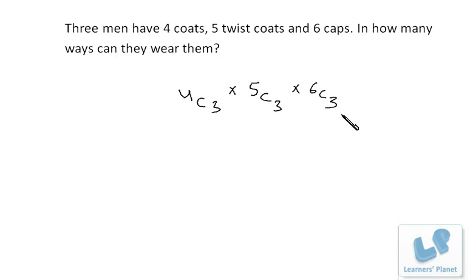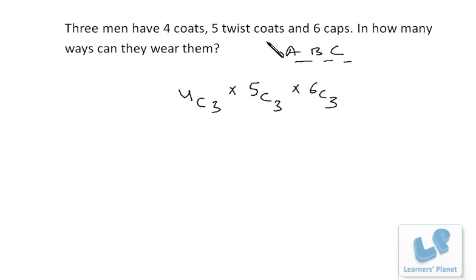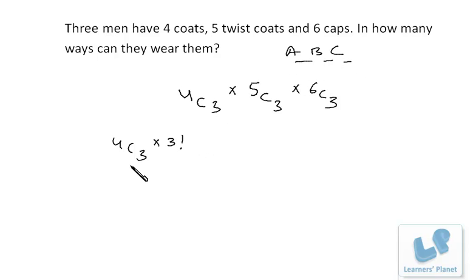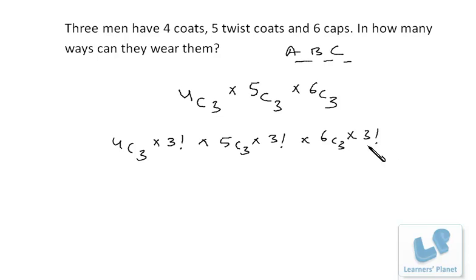Now suppose the three persons are A, B, and C. Till here we have made the selection only. There are three coats, three twist coats, and three caps, but anybody can wear any coat, twist coat, or cap — so we have to arrange them. The three selected coats can be arranged among three persons in 3 factorial ways. Similarly, three twist coats can be arranged in 3 factorial ways, and three caps can be arranged in 3 factorial ways.